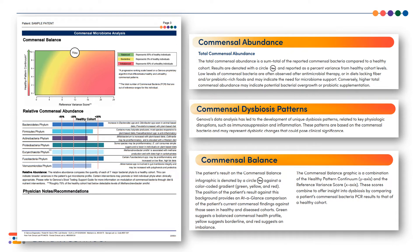Lastly, we have the commensal balance. The position of the patient's results against the color-coded gradient — green, yellow, and red — provides a comparison of your commensal bacteria findings to those seen in healthy and unhealthy individuals. Green suggests a balanced commensal health profile, yellow suggests borderline, and red suggests an imbalance. The x-axis or horizontal axis is the reference variant score, which tells us how many of the beneficial or commensal bacteria are out of range, ranging from 0 to 24. The y-axis or vertical axis is the healthy pattern continuum, which separates healthy and unhealthy patterns, ranging from 0 to 10 with 10 representing a healthy pattern.